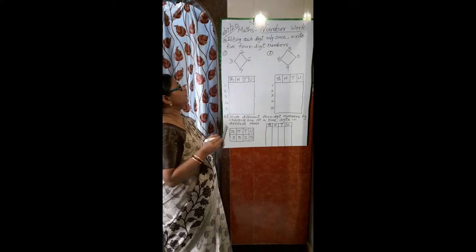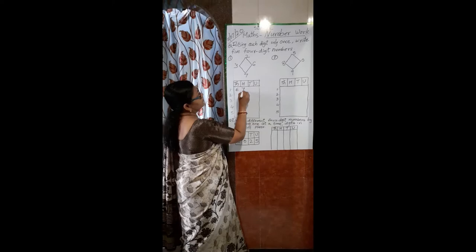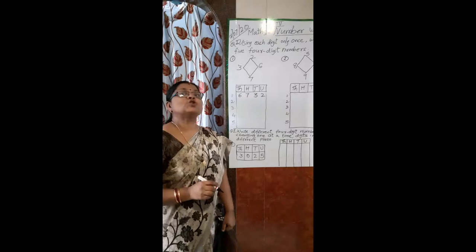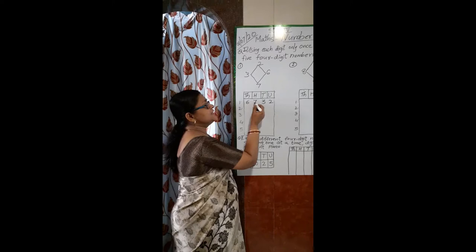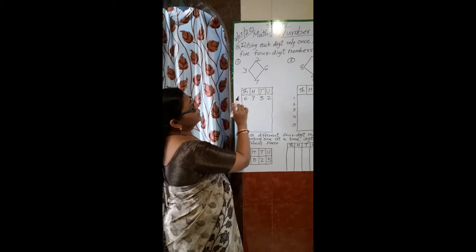Let's start. If I take the number 6 in the thousands place, 7 in the hundreds place, 3 in the tens place, and 2 in the units place, we will read this number as 6732. So this is one way we form the four-digit number.